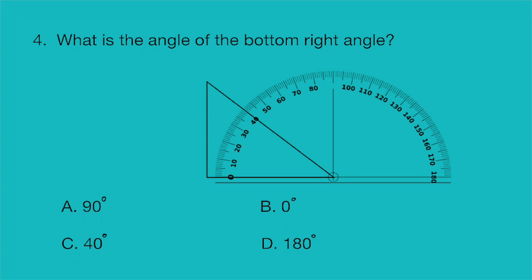Question four, what is the angle of the bottom right angle? A, 90 degrees, B, zero degrees, C, 40 degrees, or D, 180 degrees.